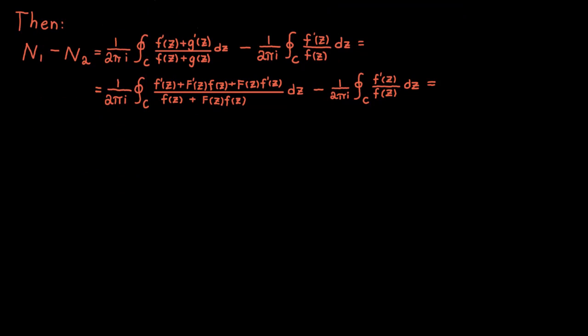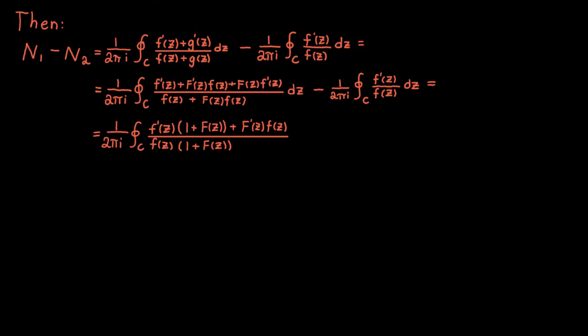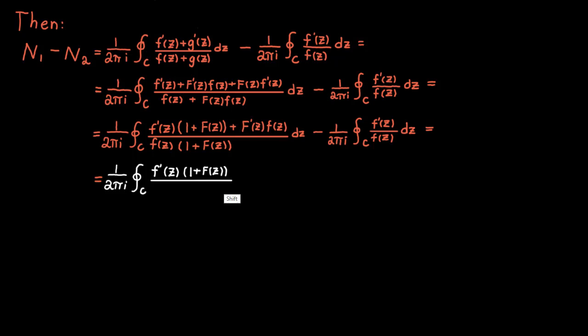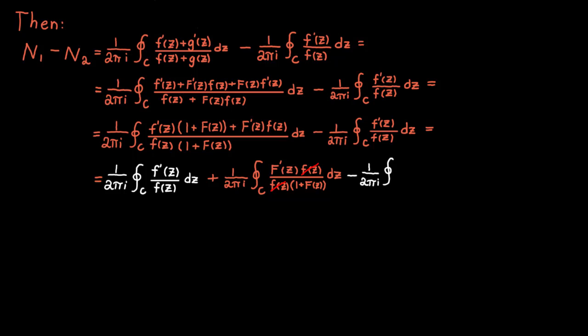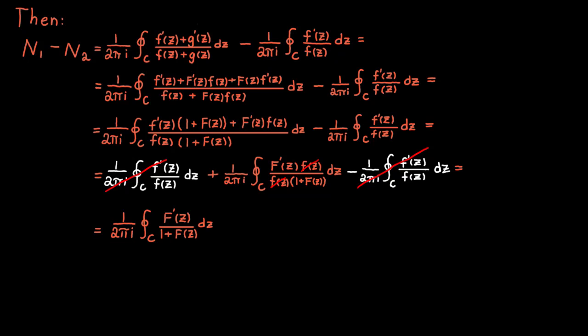The next step is to organize the first integral. Factoring out f prime from the numerator and f from the denominator, and then splitting the integral into its two terms, we simplify using the fact that 1 plus capital F appears in both denominator and numerator. We can see that one integral cancels with the other due to opposite signs, leaving only one integral, which simplifies further by canceling f from numerator and denominator. We now want to show this last integral equals zero.